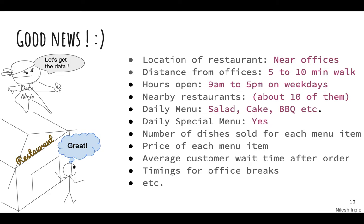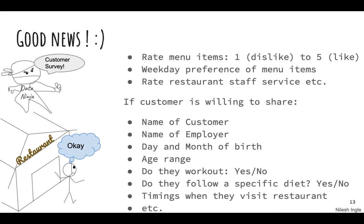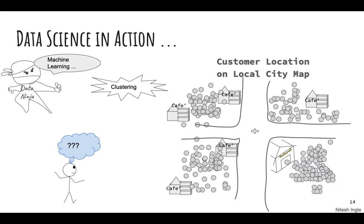First point is getting the data - the data related to the business such as location of the restaurant, distance from offices, nearby restaurants, etc. At the same time we can do a customer survey for that restaurant and ask the customers if they are willing to share their name, employer, age range, etc. All this information could then be used as parameters when we are doing the actual modeling for making predictions or finding certain problems with the business. One point we can get started with is looking at the location of the customers that come into the restaurant.